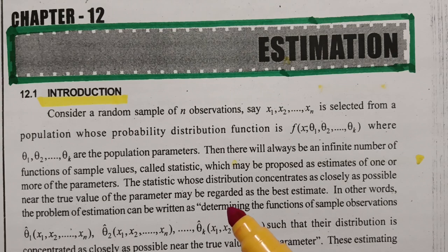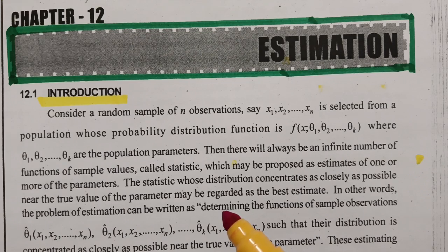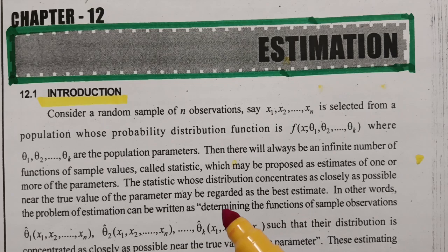So here, the estimator, estimation, population, and sample population — everything is crystal clear from this small story. The total students is nothing but the population. Selected students from each class is nothing but the sample. The college, through the process of an interview, selected a few lecturers — that is an estimate. The estimator is nothing but the feedback form. After taking the sample and computing the average from the feedback form, the lecturer is declared as good, excellent, average, or below average.